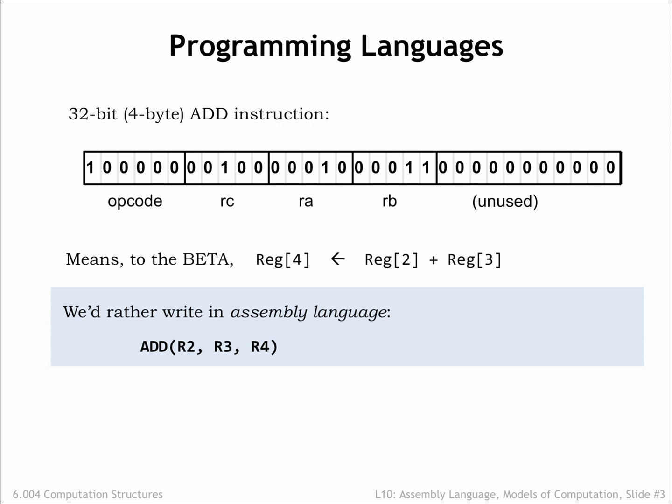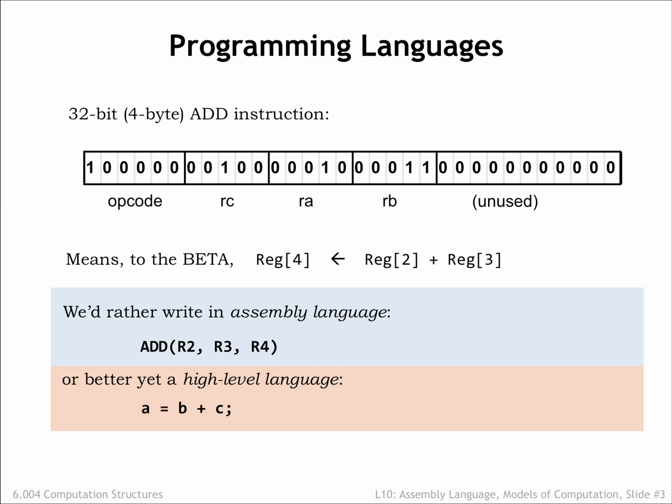Of course, we still have to think about which registers to use for which values and write sequences of instructions for more complex operations. By using a high-level language, we can move up one more level of abstraction and describe the computation we want in terms of variables and mathematical operations, rather than registers and ALU functions. In this lecture, we'll describe the assembly language we'll use for programming the beta, and in the next lecture we'll figure out how to translate high-level languages, such as C, into assembly language. The layer cake of abstractions gets taller yet.